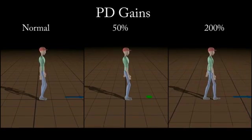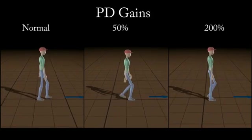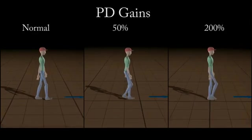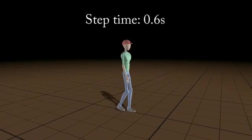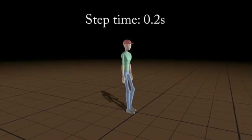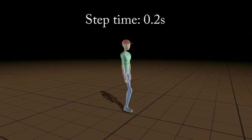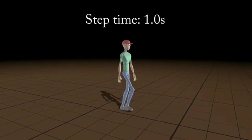The control strategy is not sensitive to the chosen PD gains. The walk cycle duration can be adjusted continuously, resulting in either rapid or slow stepping motions.